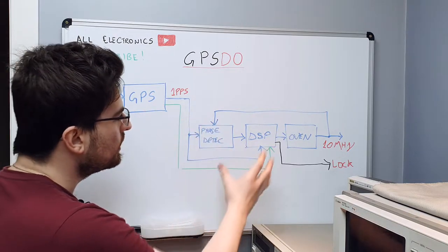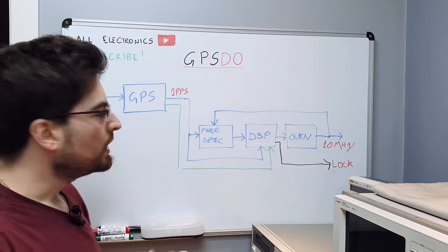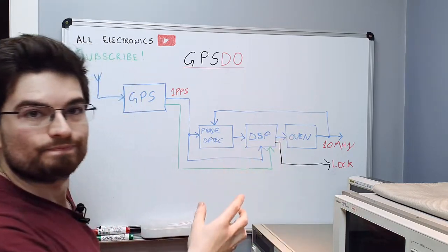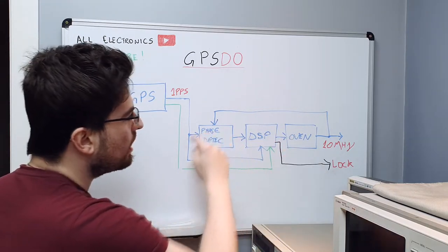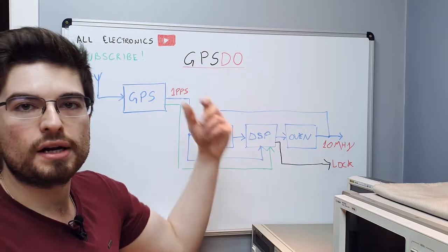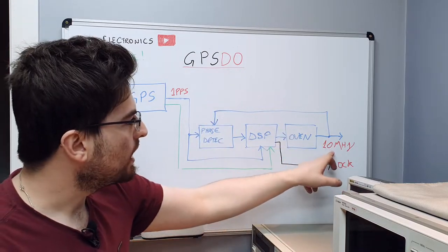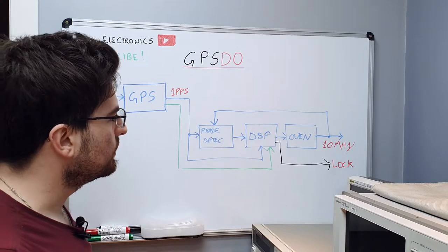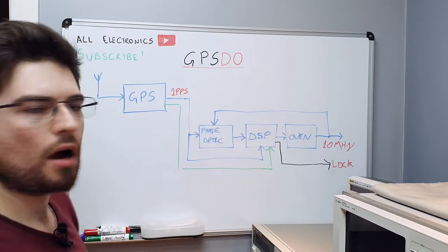This signal is what our DSP will use to control the oven to get the phase locked and have a very high frequency stability and a very precise frequency on the output. This looks like a PLL because we have a phase detector in the loop that controls a VCO.